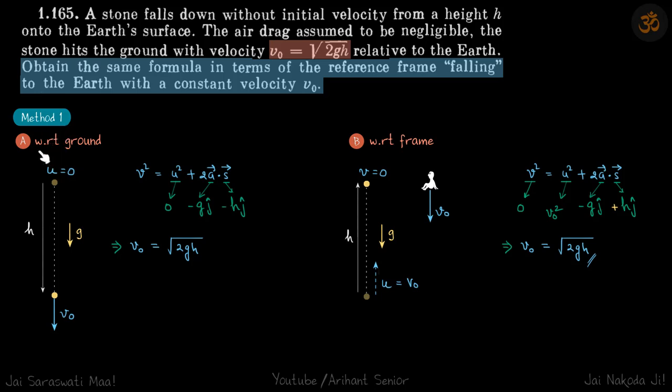First let's do it with the standard kinematics approach. Initially with respect to ground, the stone's initial velocity is 0 and final velocity when it hits the ground is v₀, and it has traveled a distance h. We're going to use our formula v² = u² + 2a·s.